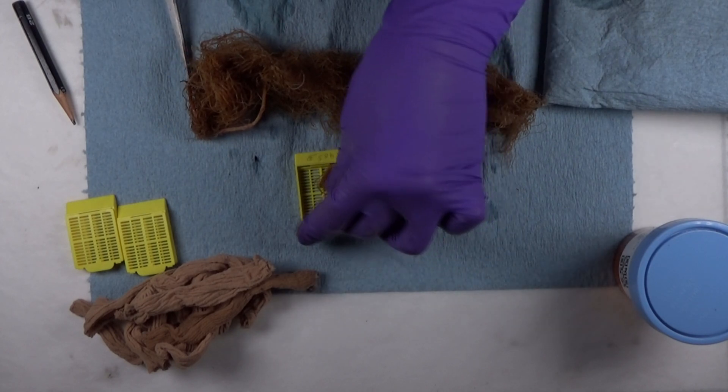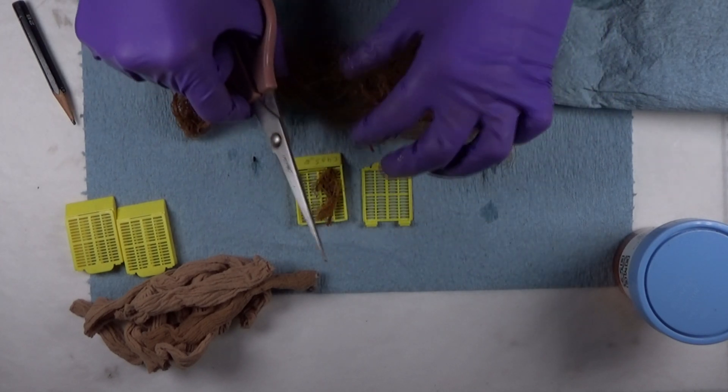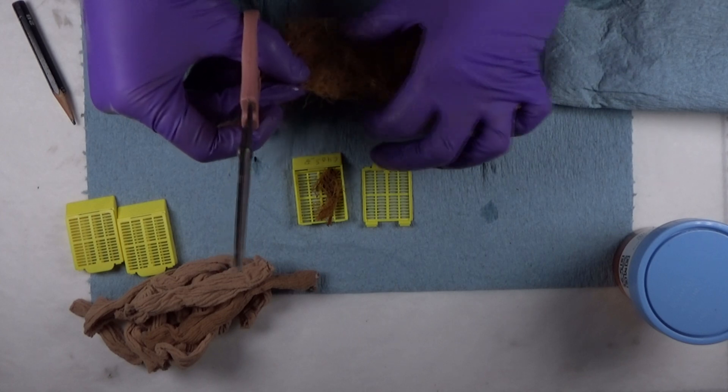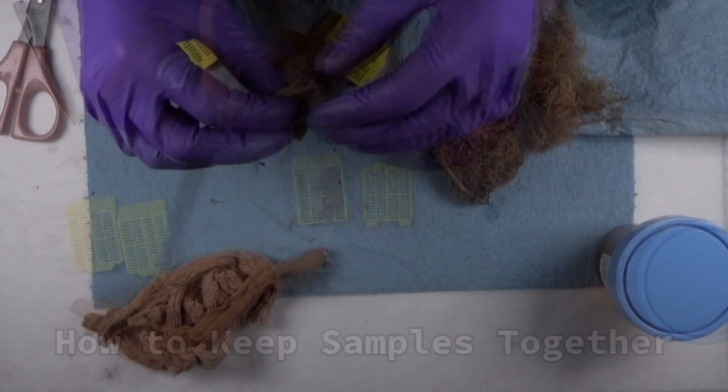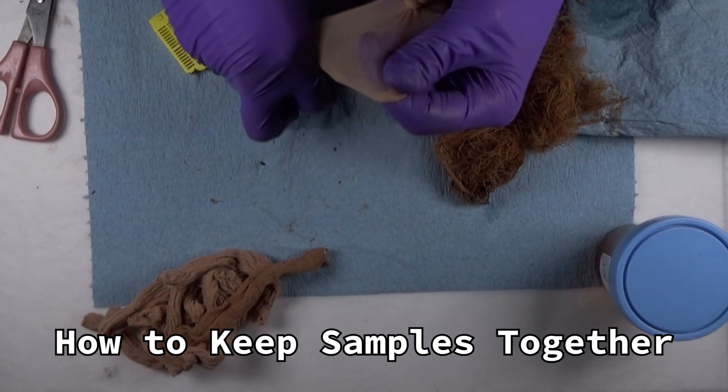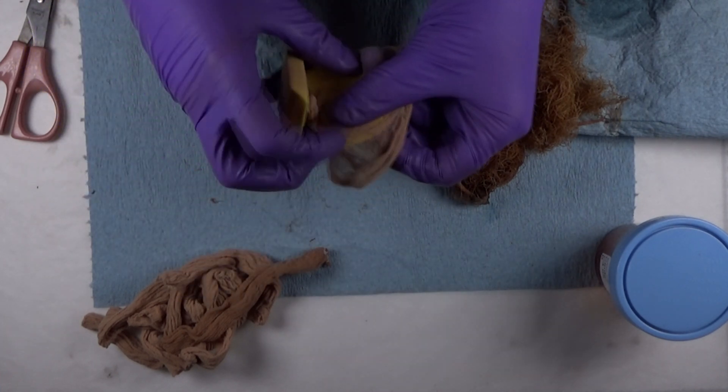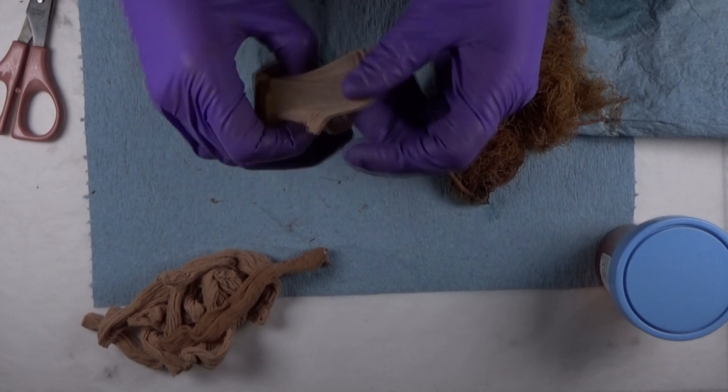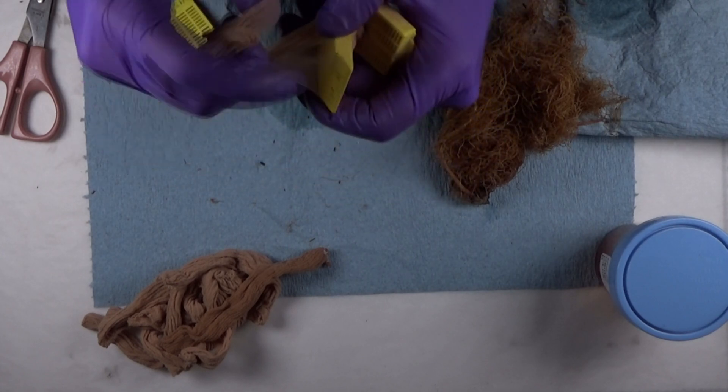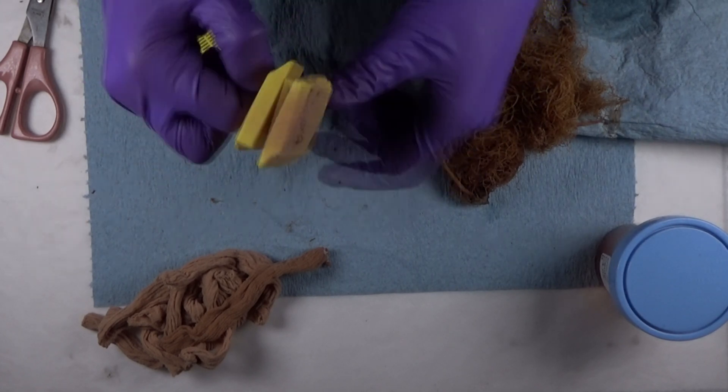Be sure not to pack the cassette too tightly or the solutions will not be able to penetrate the sample. With this style of cassette, I found that my roots would sometimes slip out during the staining process. You can order cassettes with smaller holes online or, as an alternative, we decided to wrap our samples in mesh bags and tie them shut.